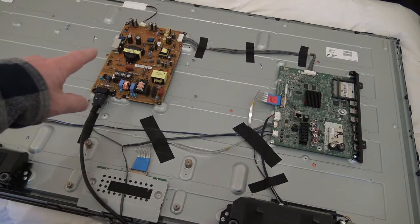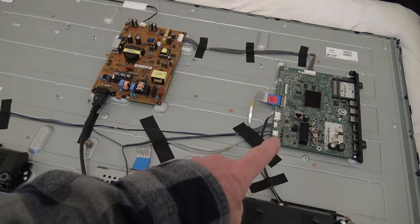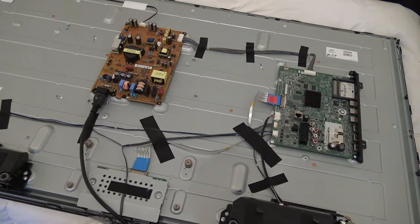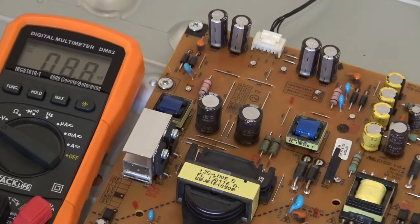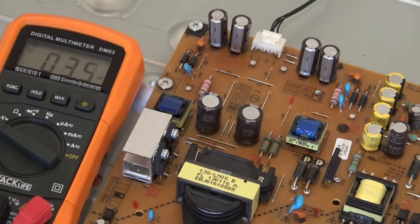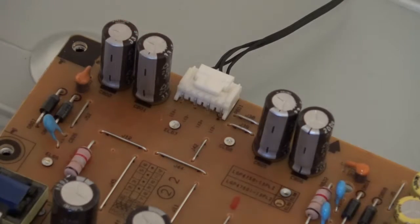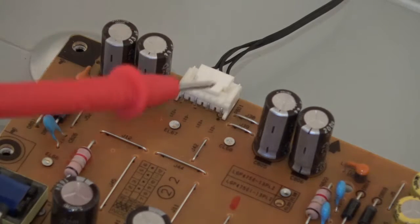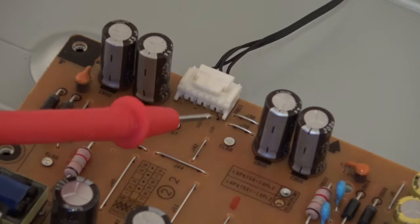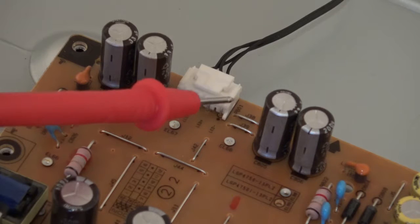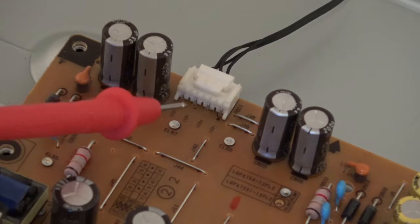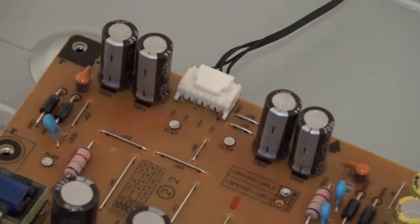I'm just going to test the output voltage to the LED strips. This is the connector with four cables. Plus or minus this side should read around 84 volts, and plus or minus on this side should be around 40 to 43 volts. That's reading 187, which means the strips have failed but there's an output from the power supply.